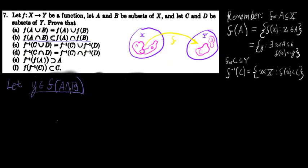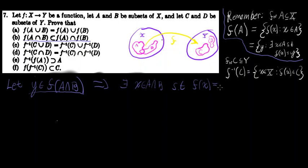So if Y is in the image of A intersect B under F, then that implies there exists an X — using the definition of the image of a set under F, what it means to be in the image of a set under a function F — there exists an X in A intersect B such that F of X is equal to Y. And if X is in A intersect B, then by the definition of set intersection, that means X is in A and X is in B.